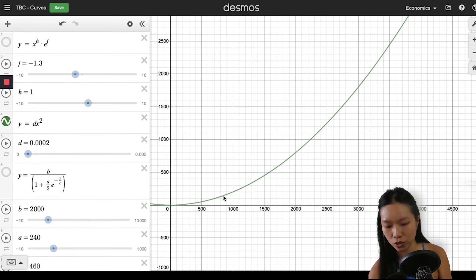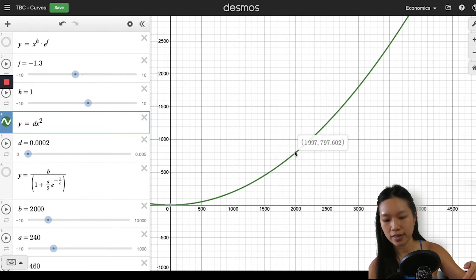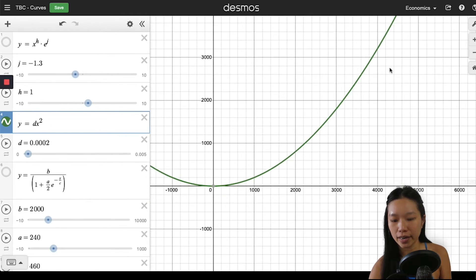So from zero to one thousand, the price increased by 200, but from zero to two thousand, the price is now 800. So the increase is quite different, and as you go higher and higher it becomes more and more steep.